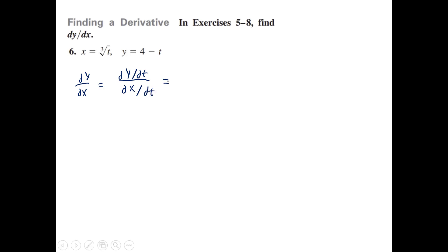dx/dt goes in the denominator — that's just the power function: bring down the exponent, take one away from the exponent. Then dy/dt also uses the power function the same way. We can clean up this complex fraction by multiplying top and bottom by three, and the t to the negative two-thirds goes up on top.